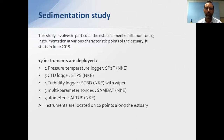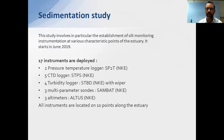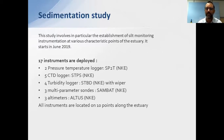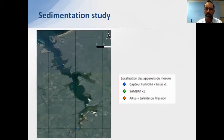They also installed turbidity loggers for measurement of suspended particles, multi-parameter probes for parameters like dissolved oxygen, and three altimeters called Altus — which we will discuss in more detail. All these instruments came from NKE and were deployed at 10 different points along the estuary.